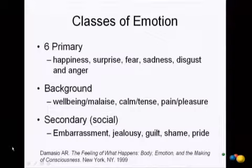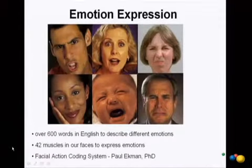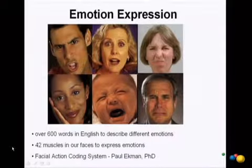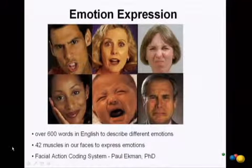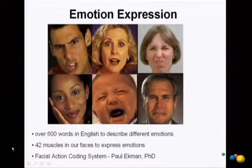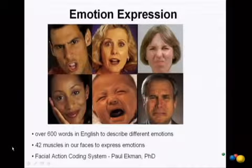Emotions are obviously expressed, and one of the most powerful, ubiquitous ways is through our facial expressions. These are the six primary emotions and their facial expressions. In the English language, there are over 600 words to describe different emotions, and on your face there are 42 different muscles that work together to express very subtly different emotional expressions. Paul Ekman from UC San Francisco, emeritus professor, actually came up with a facial action coding system to delineate what muscle groups need to activate in order to make different emotional expressions.